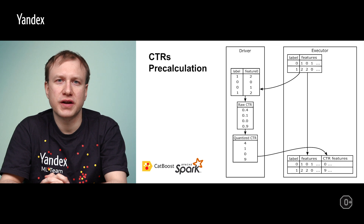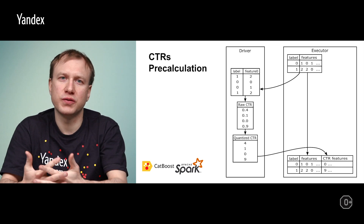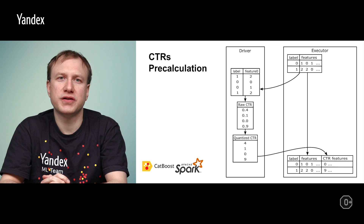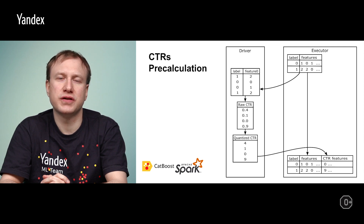All data frames with features and the new data frame with estimated CTRs both contain a special unique row index for joining. After all CTRs are computed, the original data frame is joined with the new data frame containing estimated CTRs, and as a result, a new data frame with all features and estimated CTR feature columns is created. This data is ready to be used in the training process. If no CTRs have to be computed, this step is simply skipped.